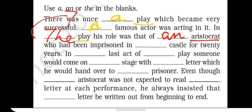So: an aristocrat who had been imprisoned in a castle for 20 years. This castle is also introduced for the first time, so we use 'a' there. In the last act — we use THE because we have certain words before the noun, like 'last,' 'first,' and 'right.' When there are superlative degrees, we use THE before them.